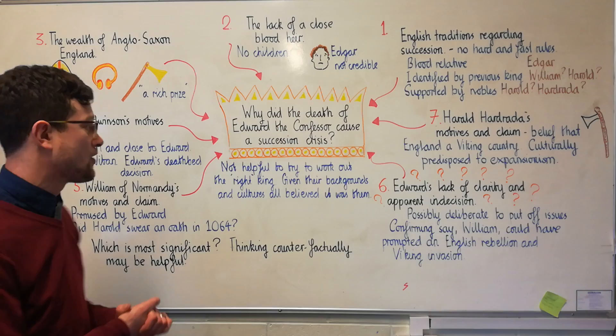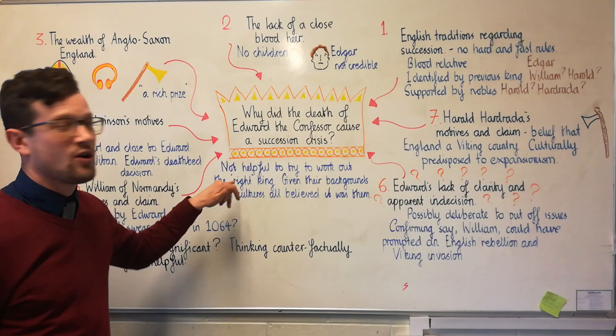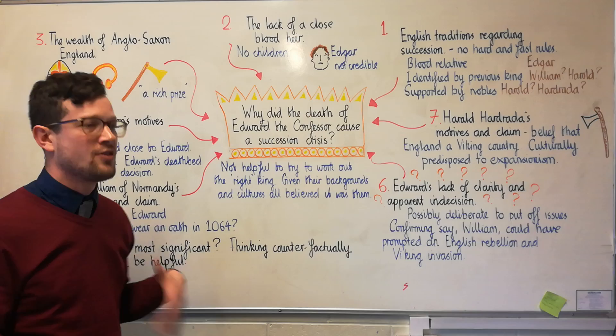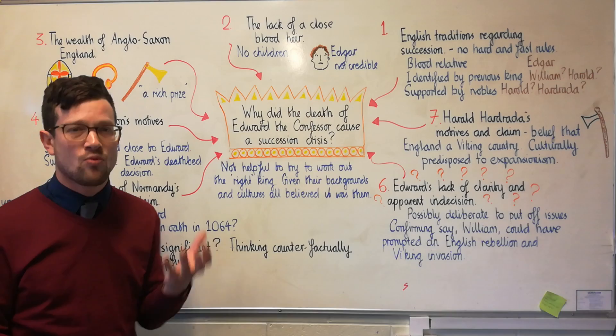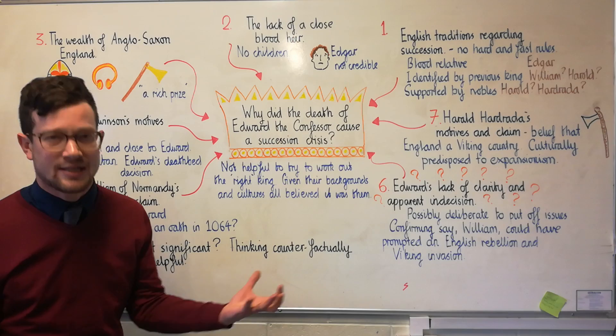Before we look at which of these factors was most significant, I just want to look at something that might be an unhelpful way of considering this question. When students are taught this at a younger age, lessons often encourage them to try to work out who the right king is. I'm going to suggest that that's a bad idea, because it invites presentism and implies that there was one right successor that would have been accepted by all. Given their backgrounds and cultures, it's more likely that each of the contenders strongly believed that they were the rightful king from their own point of view. Trying to work out if there was a right one sends us down a blind alley — a cul-de-sac. It's a red herring.